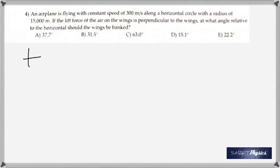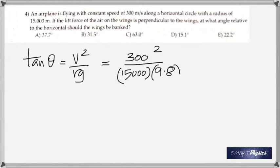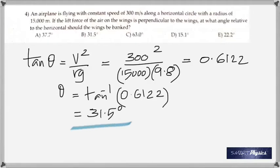Brings us to the fourth one, which is really straightforward. An airplane is flying with constant speed of 300 m per second along a horizontal circle with a radius of 15,000 m. If the lift force of the air on the wings is perpendicular to the wings, at what angle relative to the horizontal should the wings be banked? Now this is about banking. And it doesn't matter that it's talking about an airplane. You apply the equation for banking that we know is tan theta equals V squared by Rg. Velocity is 300. Radius is 15,000. G is 9.8. That gives you 0.6122. And when you take the arc tangent, you get 31.5 degrees. Now that was not tough either.